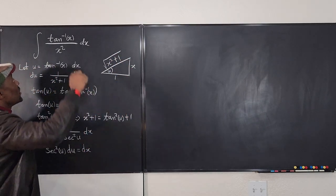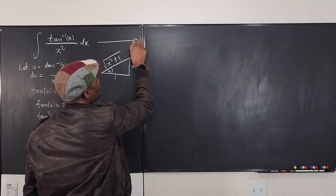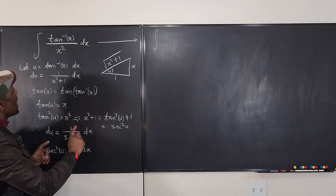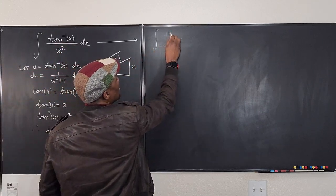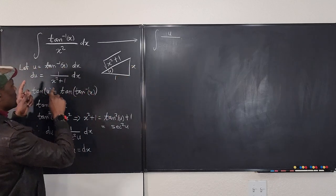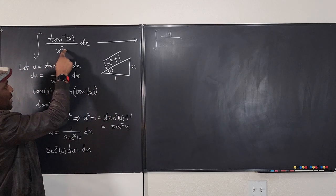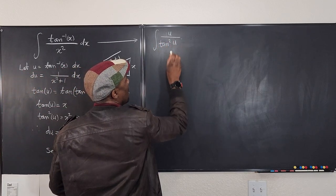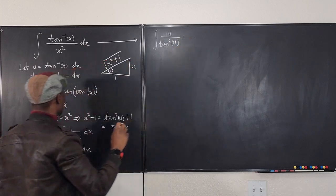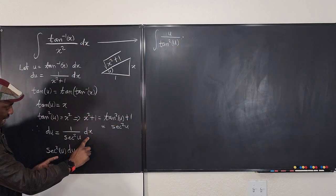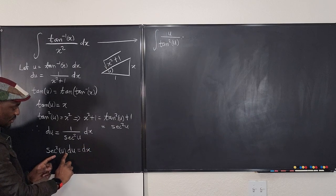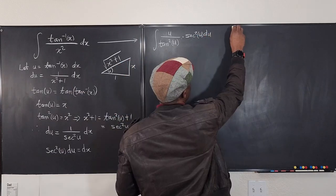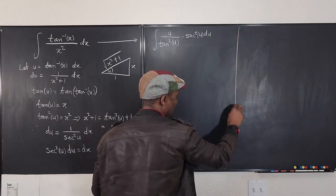We've got all the ingredients we need. Going back to write the integral: the integrand becomes u (since u = arctan(x)), times tan²(u) for x², times sec²(u) du for dx. Let me simplify this.